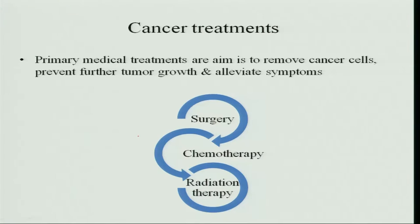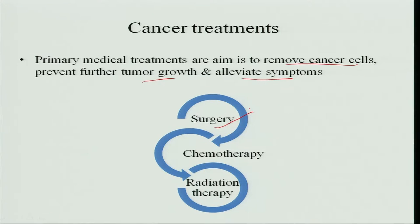The primary medical treatments for cancer are aimed at removing cancer cells, preventing further growth, and alleviating symptoms. There are three treatments: surgery for surgical removal of the cancer growth, chemotherapy to chemically destroy remaining cells, and radiation therapy where radiation burns away any remaining cells.